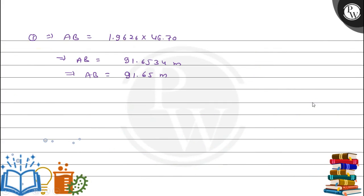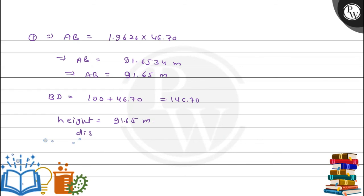The first point is D, so the distance BD is what we need. We already found BC = 46.70 meters, so BD = BC + 100 = 46.70 + 100 = 146.70 meters. So our final answers are: height of tower AB = 91.65 meters, and distance of first point from tower BD = 146.70 meters. I hope you understood it well. Good luck, thank you.